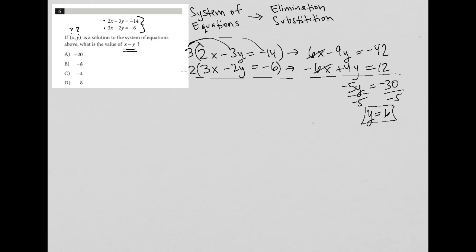I'm going to just choose the second one. The bottom equation says 3X minus 2Y equals negative 6. Well, now that I know that Y equals 6, I'm going to say this is actually 3X minus 2 times 6 equals negative 6.